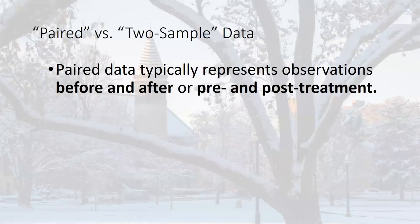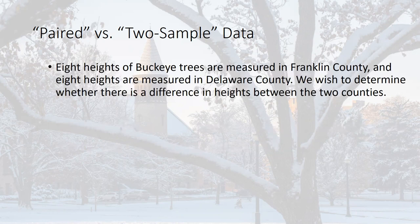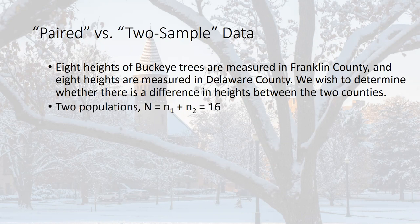So what is paired data and what is two-sample data? Because they're similar to each other and you have to know the difference to know when to use each of these tests. Paired data usually represents observations before and after, or pre-treatment and post-treatment. That's different from two-sample tests, where we have two distinct samples from two distinct populations. For example, eight heights of buckeye trees are measured in Franklin County and eight heights are measured in Delaware County — two distinct populations, two samples. This is a two-sample test with 16 total observations.